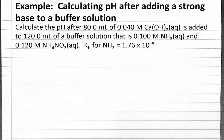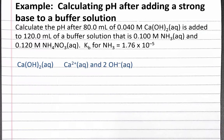First, we want to evaluate what is in solution and what will affect pH. The aqueous calcium hydroxide is a strong base, and it splits apart completely into calcium 2+ and 2 hydroxide ions. Calcium 2+ is the counter ion of a strong base, so it does not affect pH — we won't have to keep track of it. Since the hydroxide ion is a strong base, we'll want to consider what it's going to react with in the buffer solution.